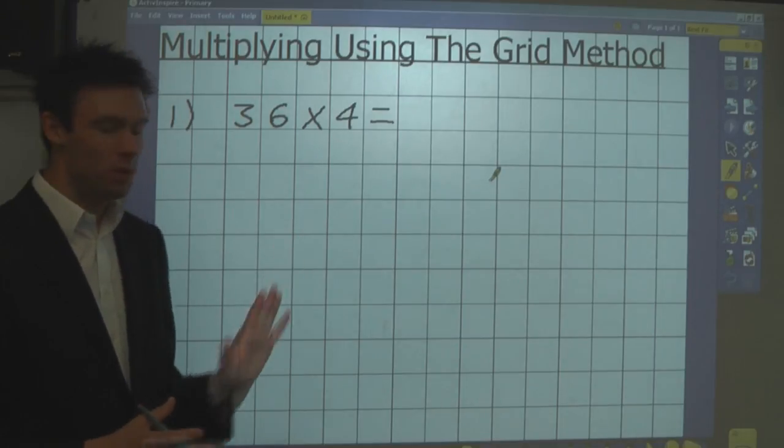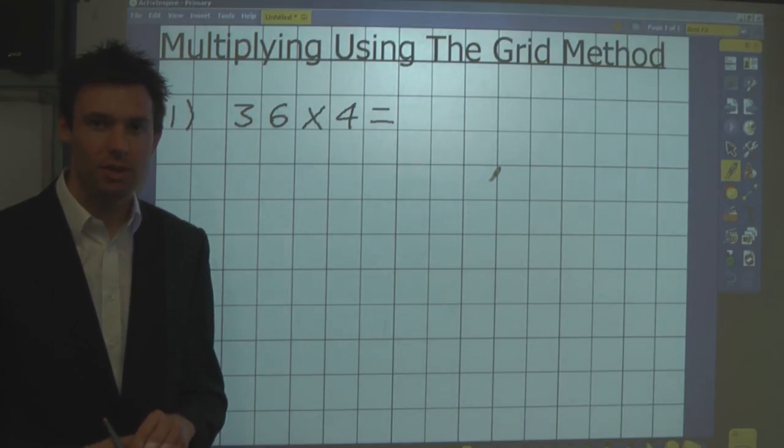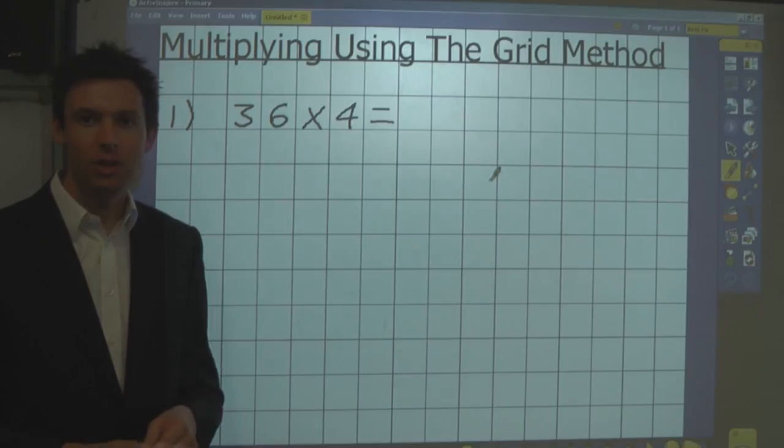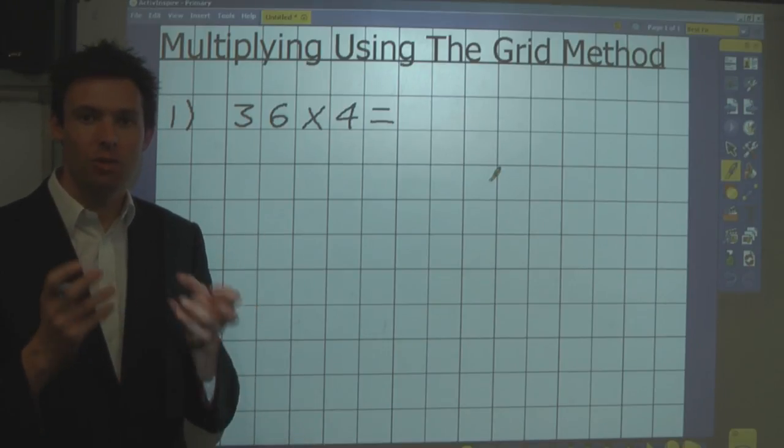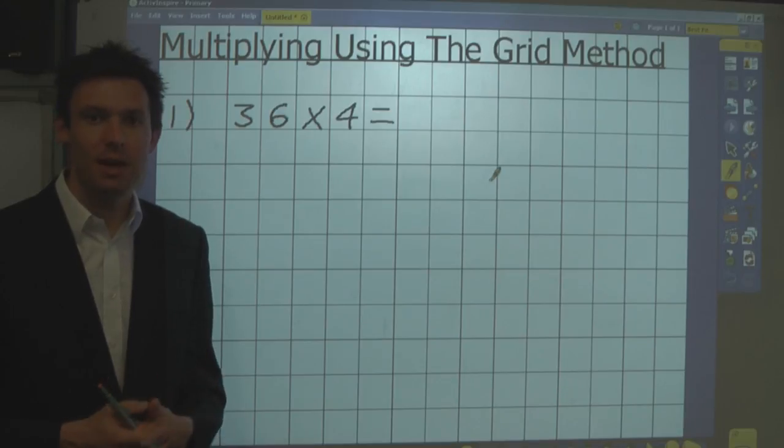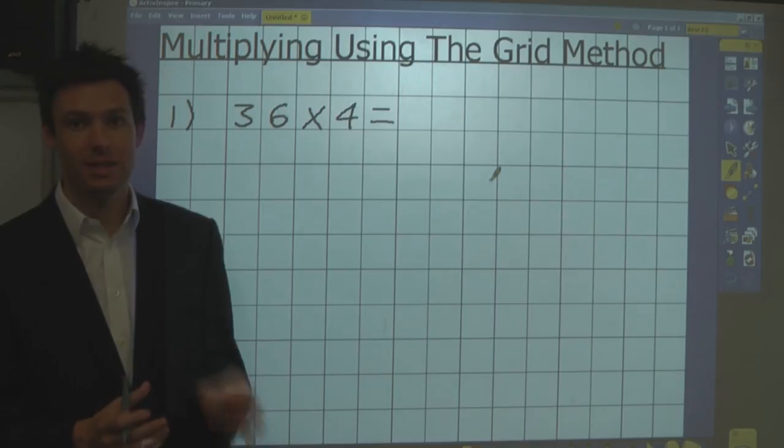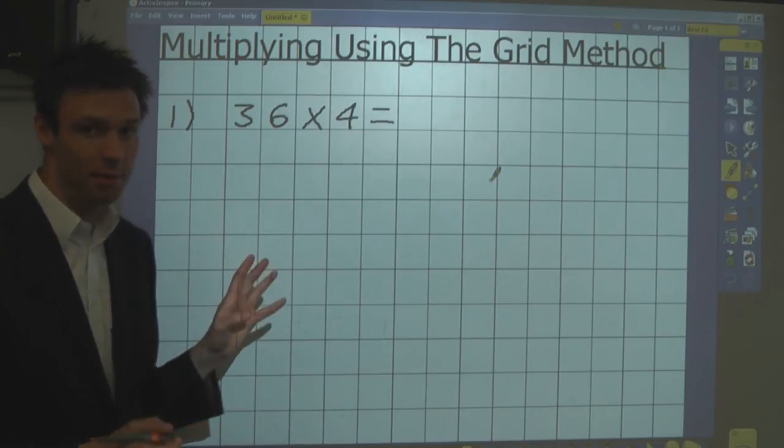And to do this nowadays we use a method called the grid method, which is a fantastic method. It really shows the children how to partition the numbers, understand place value, it reduces the number of mistakes that they make, and in our experience it's by far the best method in terms of the children being successful at multiplying. And this is how it goes.